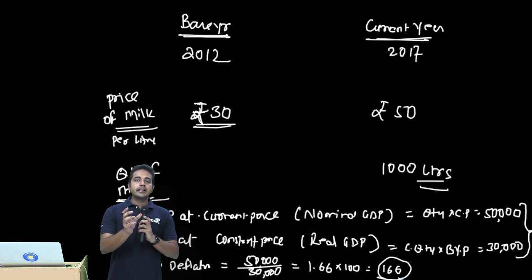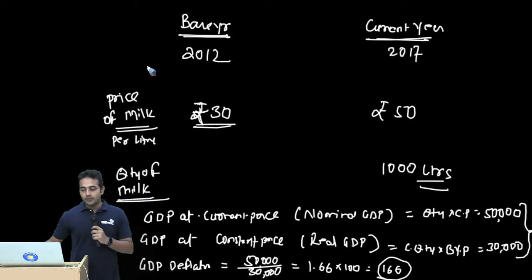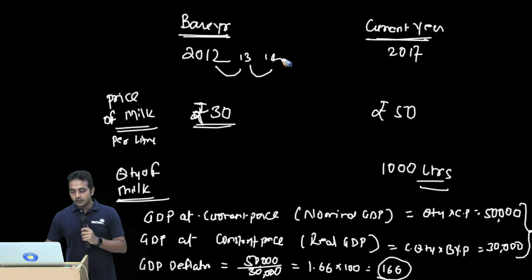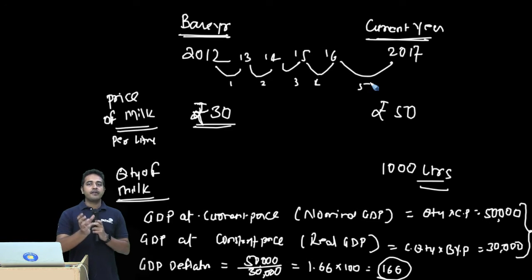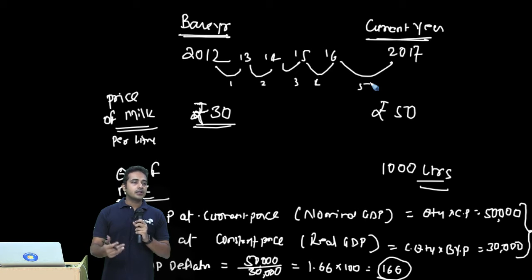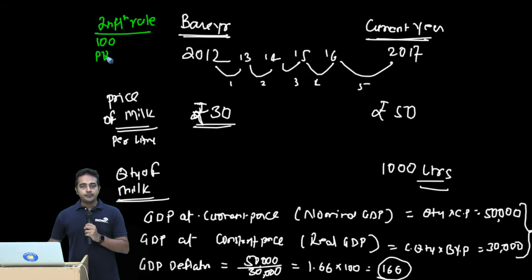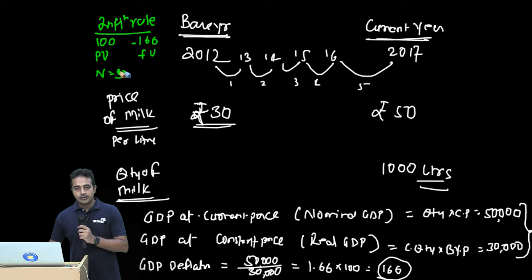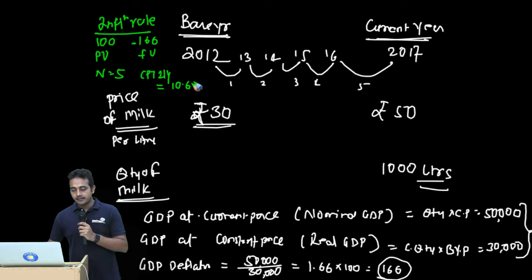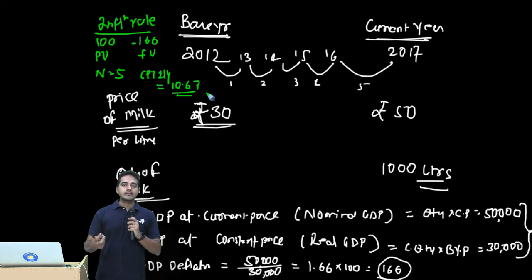Now, how do you use that number? If the current GDP deflator is 166 with a base year of 2012, you count the years: 2012 to 2013, 2013 to 2014, through to 2017 — that's 5 years. To find the average inflation rate, you set 100 as the present value and 166 as the future value over N = 5 years, then compute the rate. That comes to approximately 10.67%, giving us an idea of the average annual rate at which prices have been increasing.